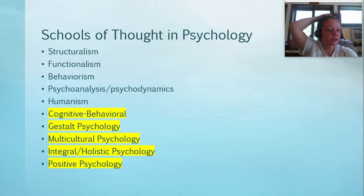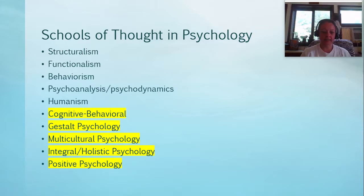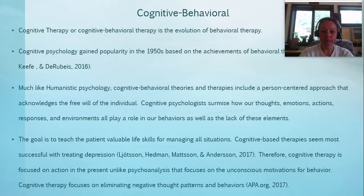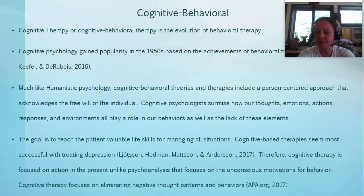We finished up our last lecture with humanism, and we see that around the 1950s psychology really starts branching out because we have a lot of different responses to psychoanalysis. With the rest of this lecture we'll go ahead and wrap up our schools of thought. Today we're going to start with cognitive behavioral therapy, which is basically the evolution of behaviorism.